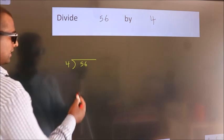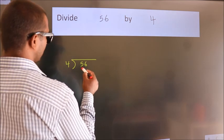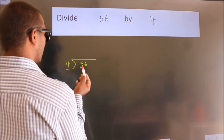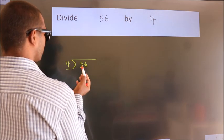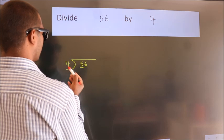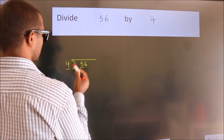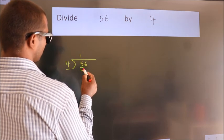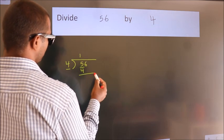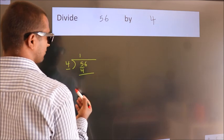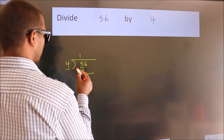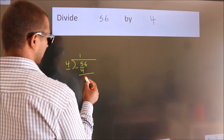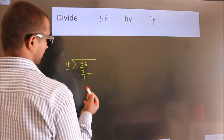Here we have 5, and here 4. A number close to 5 in the 4 times table is 4 — 4 once is 4. Now we should subtract. We get 1.